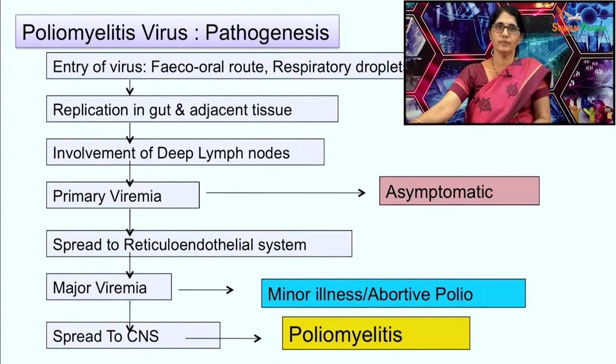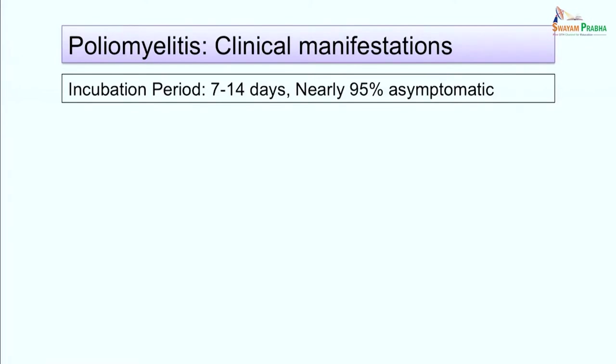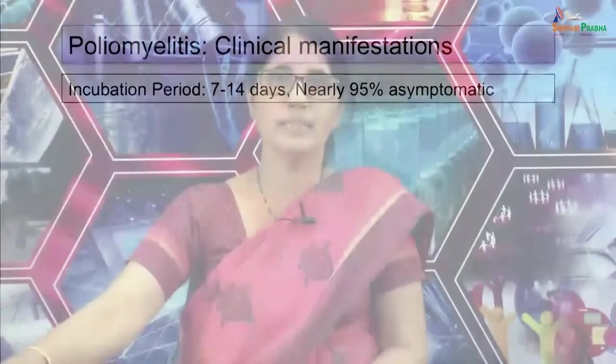The virus multiplies in cells of the intestinal tract — epithelial cells and submucosal lymphoid tissue — as well as in Peyer's patches and tonsils, with involvement of deep lymph nodes. After that the virus enters the blood and causes primary viremia through the thoracic duct. In 95 percent of cases the infection is terminated at this stage. In about 5 percent of cases, the virus spreads to the reticuloendothelial system causing major viremia, resulting in minor illness or abortive poliomyelitis. In less than 1 percent of cases, the virus spreads to the central nervous system, involving anterior horn cells and neurons, causing poliomyelitis.